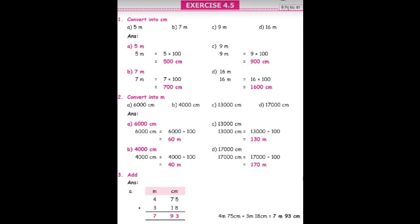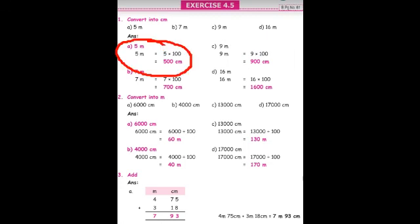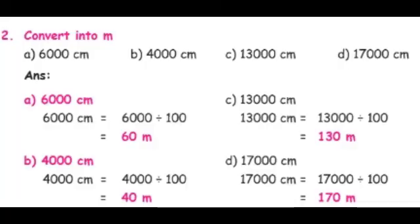Now we will see Exercise 4.5. We already learned conversions, addition, and subtraction based on measurements. The first sum: convert 5 meters into centimeters. The formula is 1 meter equals 100 centimeters. When converting meters to centimeters, we multiply by 100. So 5 meters equals 5 into 100, which equals 500 centimeters. Question number 2: convert centimeters into meters. When converting centimeters to meters, we divide by 100.